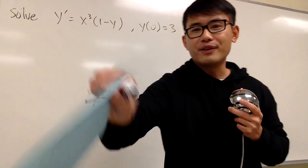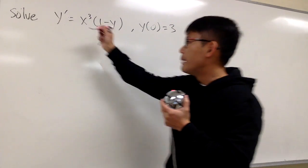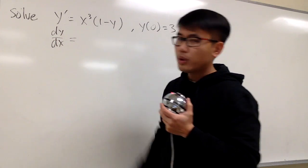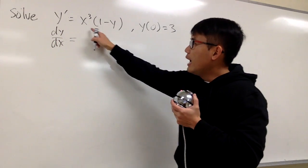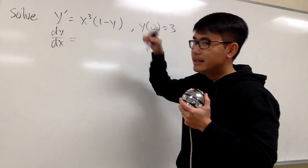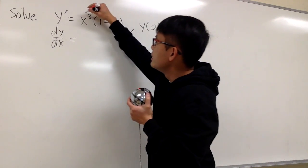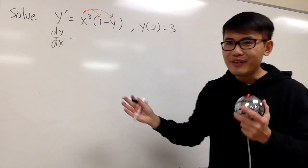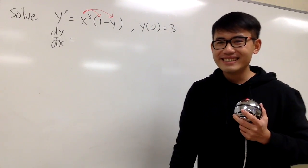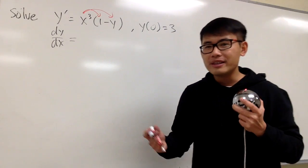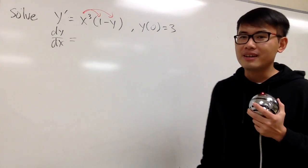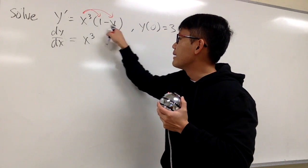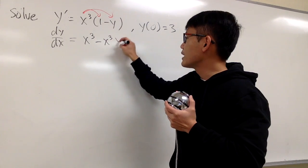Let's make this happen. I'm going to rewrite y prime as dy/dx. On the right-hand side, I am going to distribute the x to the third power into the parentheses — it's very different than separating the variables. If you want to review how I did it last time, you can watch the video in the description. This times that gives x to the third power, and then this times that gives minus x to the third power times y.